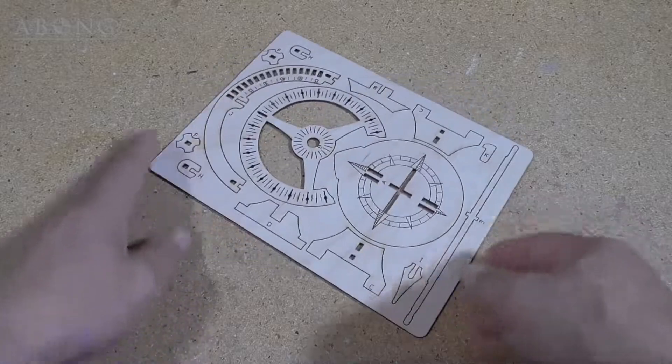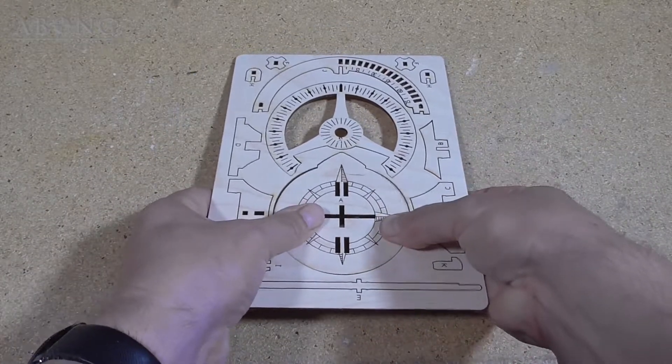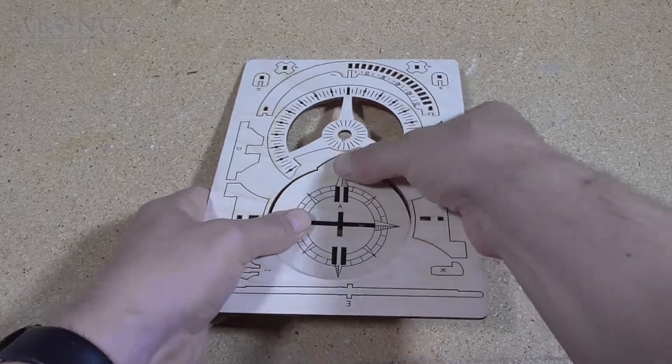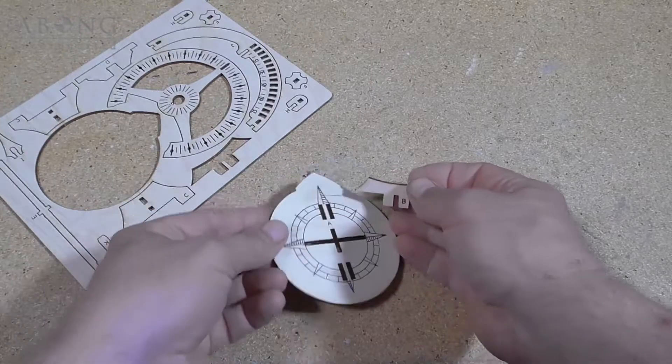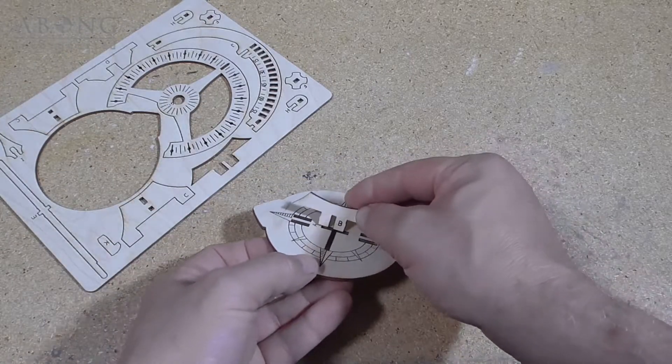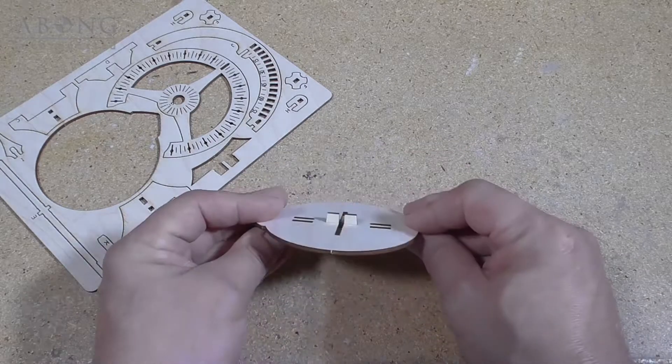So we bring back in our kit and we can start with part A. So just pop part A out of the carrier. And part B. So part B goes like so. It snaps in.